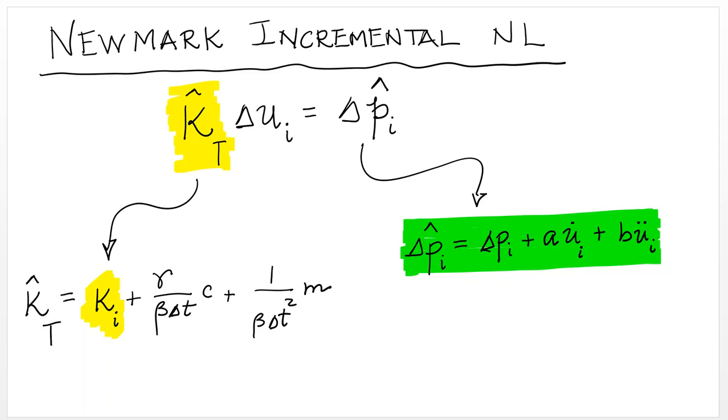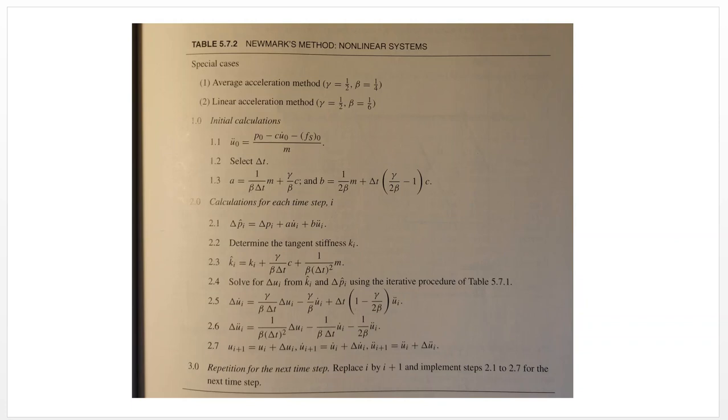So how does it work? Well, if you look at table 5.7.2, you see here that first of all, you have to choose whether you're doing average or linear acceleration method that defines the coefficients gamma and beta. You select the initial conditions. You select a delta T from which the coefficients A and B are computed.